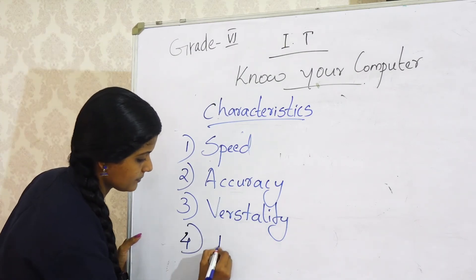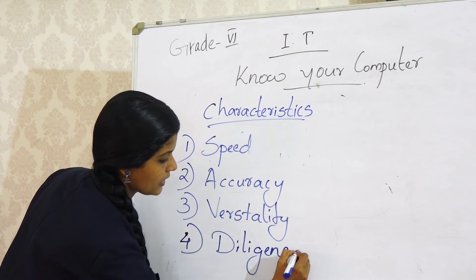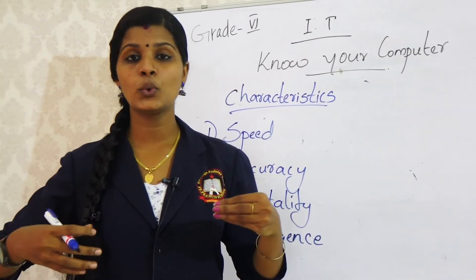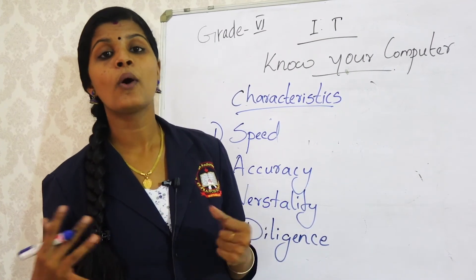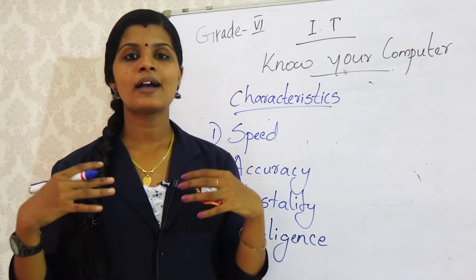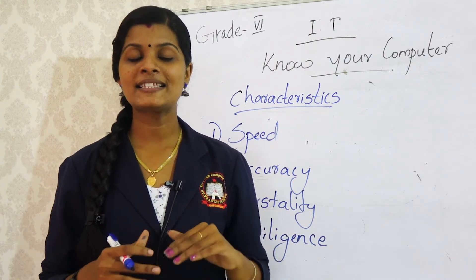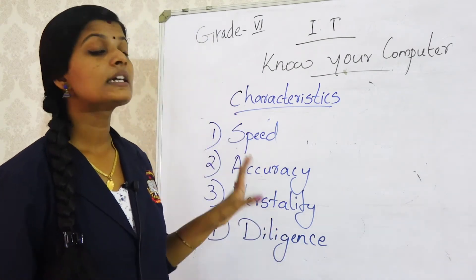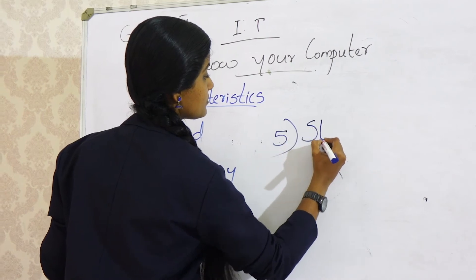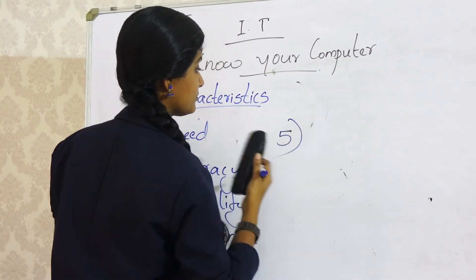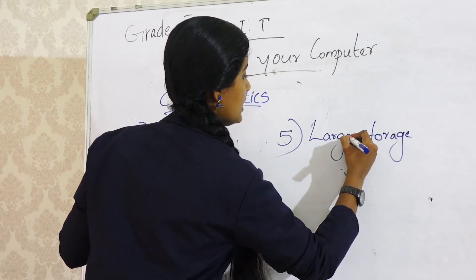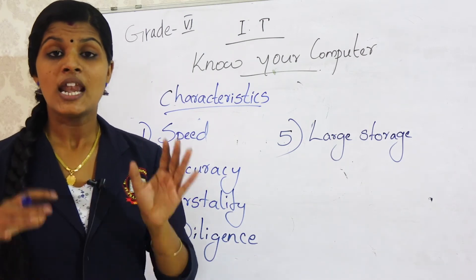The fourth characteristic is diligence. When we do work, we become tired or bored — but in the case of a computer, there is no tiredness or boredom. A computer never says it is tired or bored. The last characteristic is large storage — a computer can store a large amount of data.